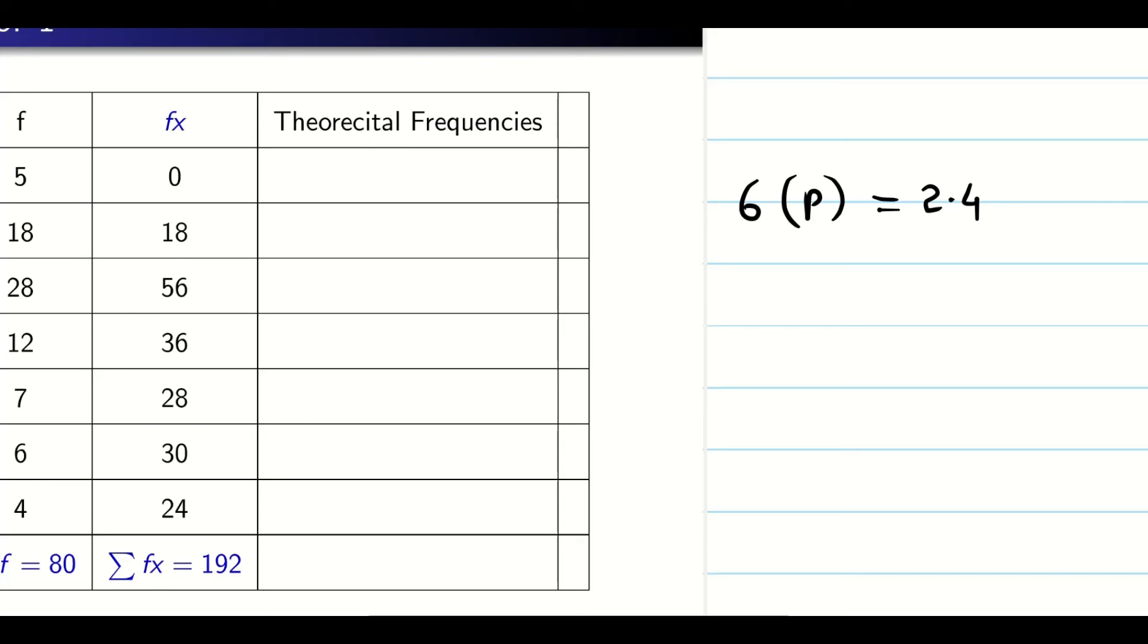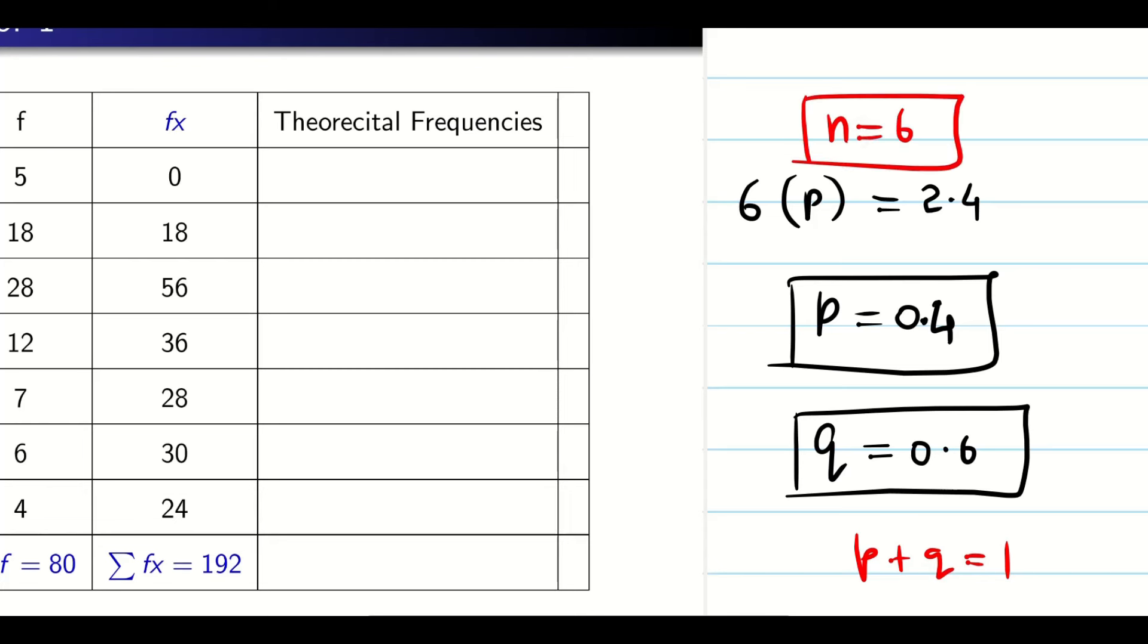Now let us finish the problem. So it's going to be very simple. From this, I found my P value is 0.4. Once you find the P value 0.4, immediately I can say Q is 0.6 because P plus Q is equal to 1. So now I know my P, I know my Q, I know my N. My N is 6. So everything is ready guys. Now I want to find the theoretical frequency, that is expected frequency.